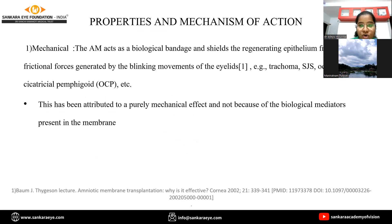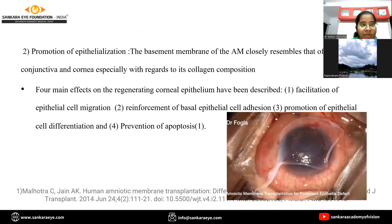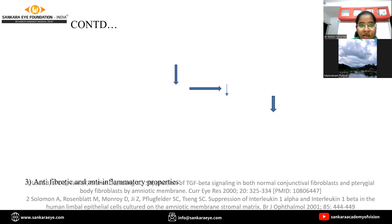For example, it is used in trachoma, Stevens-Johnson syndrome, ocular cicatricial pemphigoid. Next, promotion of epithelization: the basement membrane of amniotic membrane closely resembles that of conjunctiva and cornea, especially with regard to collagen composition. Four main effects which facilitate the regenerating corneal epithelium are facilitation of epithelial cell migration, reinforcement of basal epithelial cell adhesion, promotion of cell differentiation, and prevention of apoptosis.